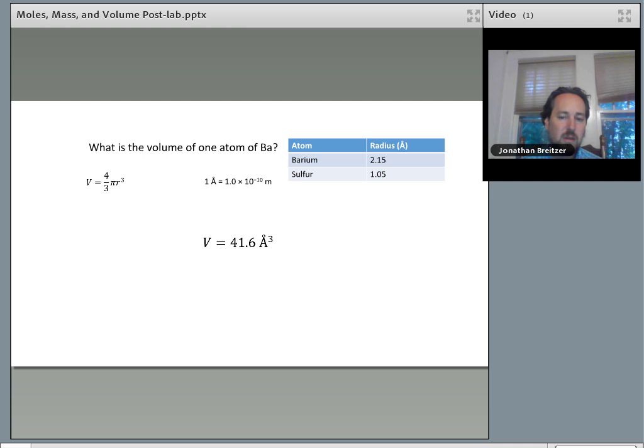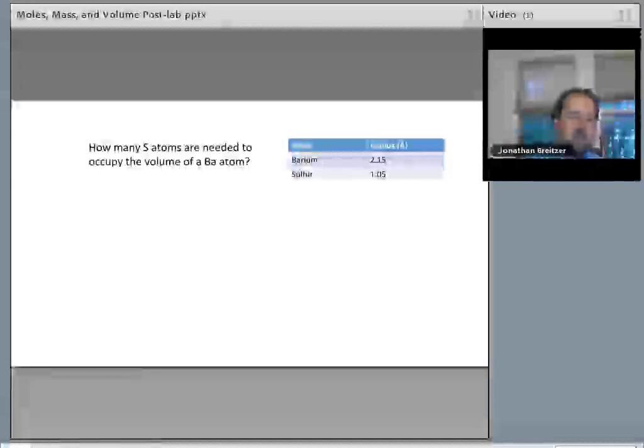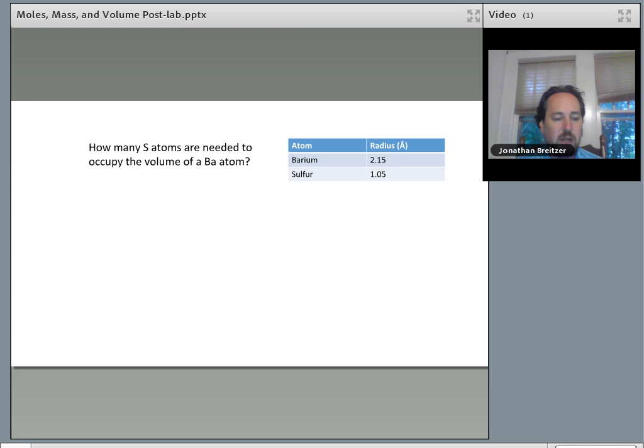Now we're going to find the ratio: how many sulfur atoms are needed to occupy the volume of a barium atom, or in general, how many of the smaller atoms are needed to occupy the volume of the larger atom.